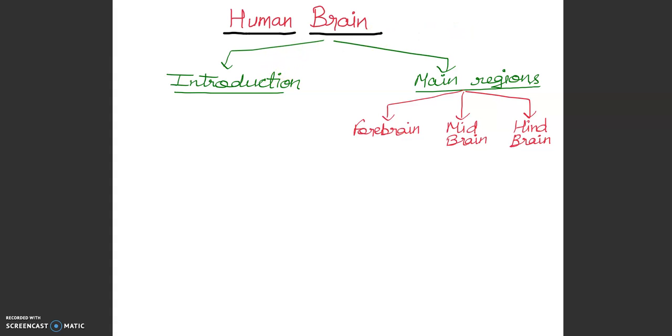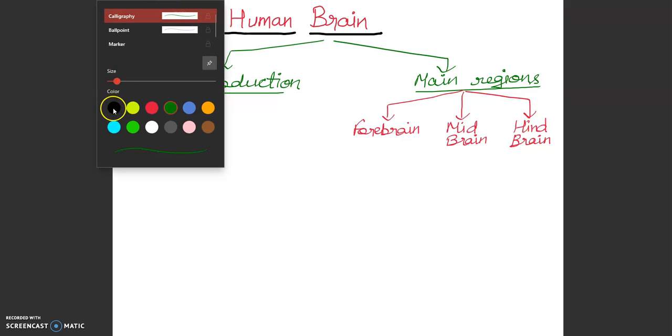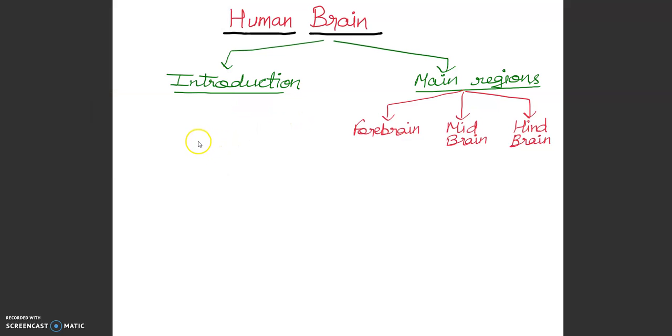So we are going to start with the introductory part. First, it is a highly specialized organ which is the highest or you can say this is the coordinating center in the human body. So brain, you can write, this is the coordinating center in human body.